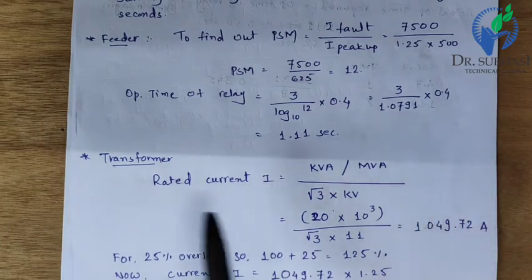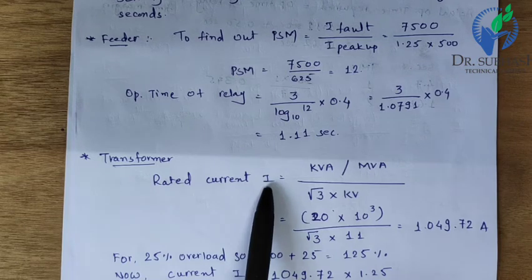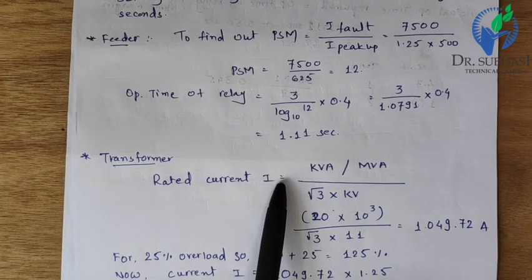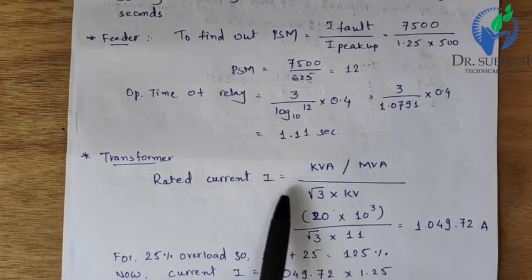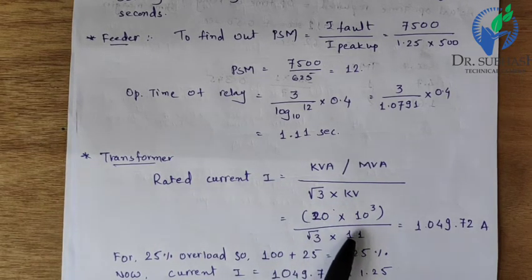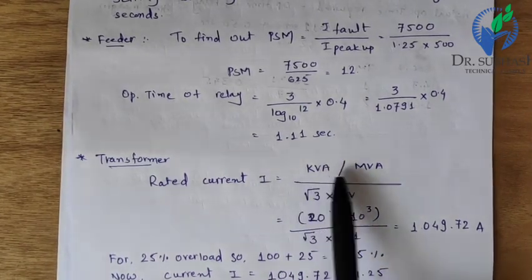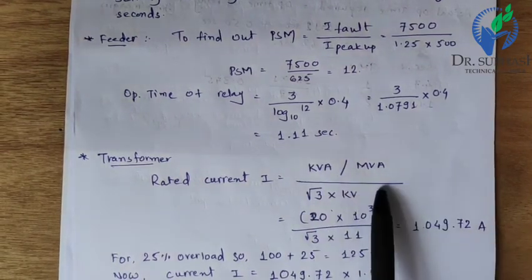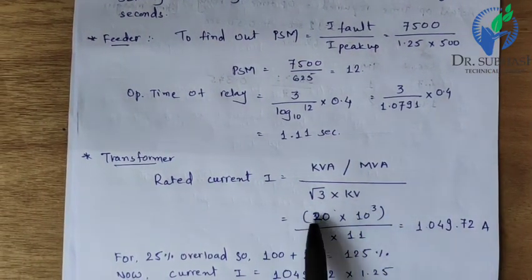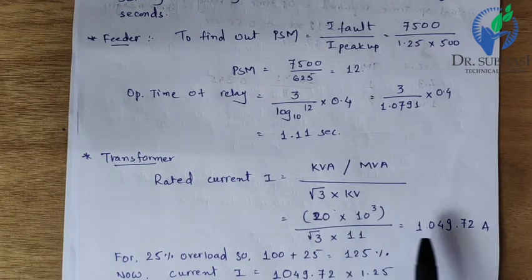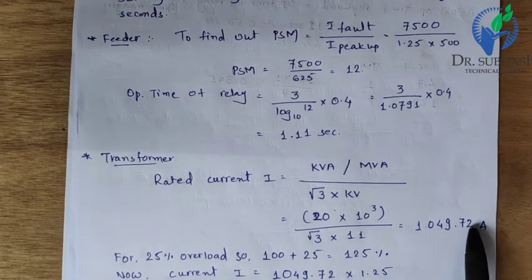For the transformer, we find the rated current from the 20 MVA rating and 11 kV voltage. Using I = MVA / (√3 × kV) = (20 × 10³) / (√3 × 11) = 1049.72 A. This is the rated current of the transformer.